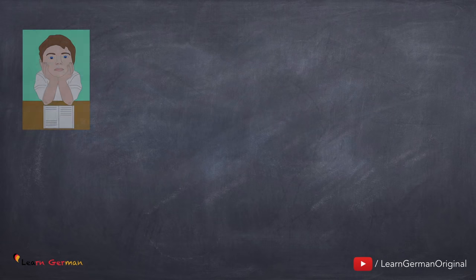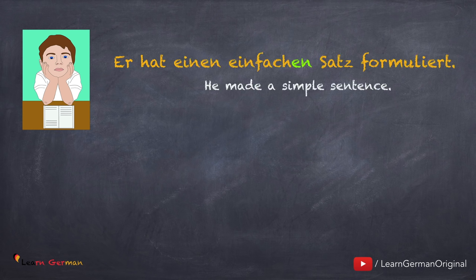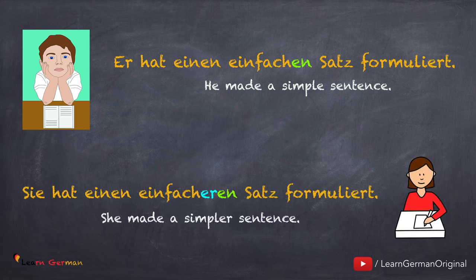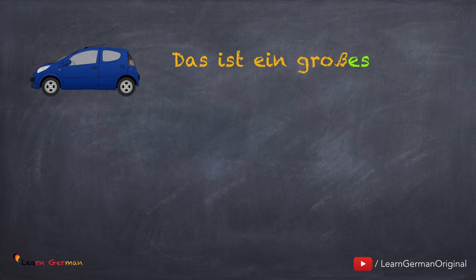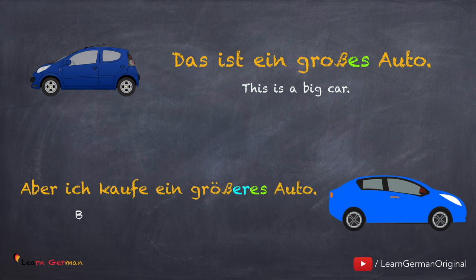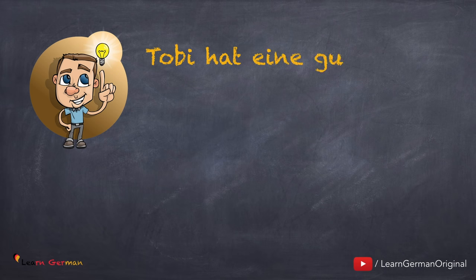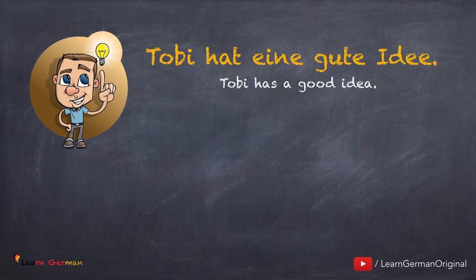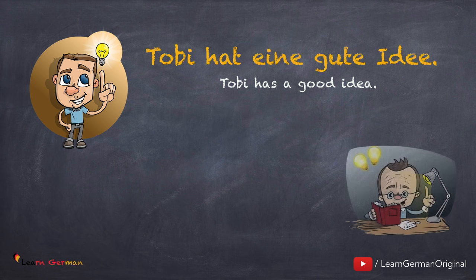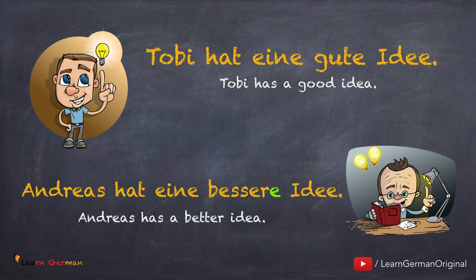Jetzt schauen wir uns ein paar Beispielsätze an. Er hat einen einfachen Satz formuliert. Sie hat einen einfacheren Satz formuliert. Here the noun is in the Akkusativposition, therefore the ending en. Das nächste Beispiel: Das ist ein großes Auto. Aber ich kaufe ein größeres Auto. Die gleiche Regel gilt auch für unregelmäßige Adjektive. Tobi hat eine gute Idee. Andreas hat eine bessere Idee.